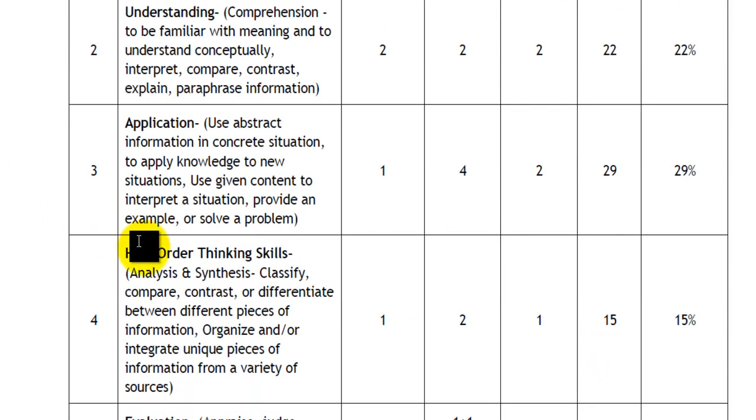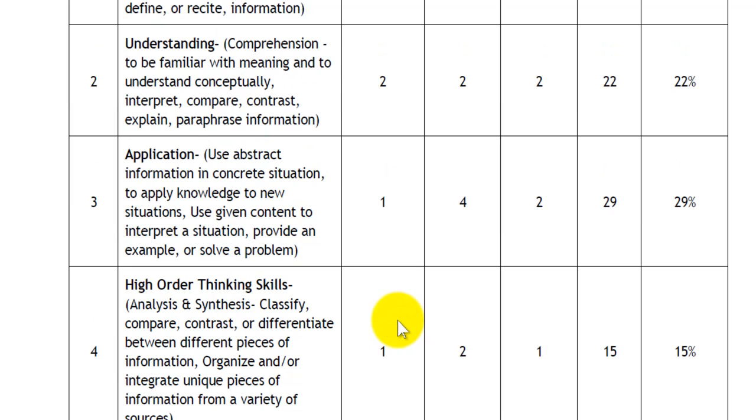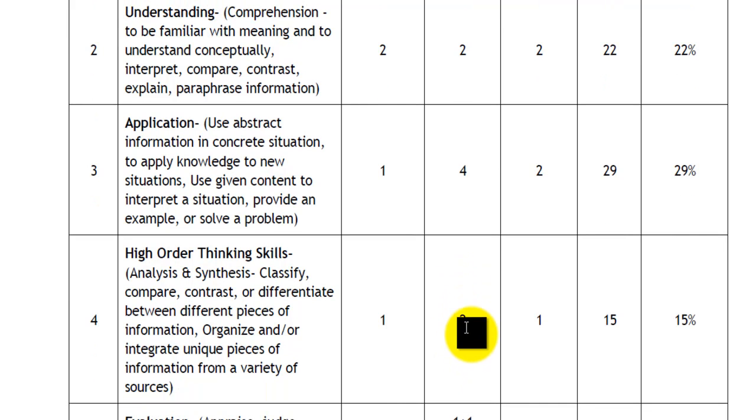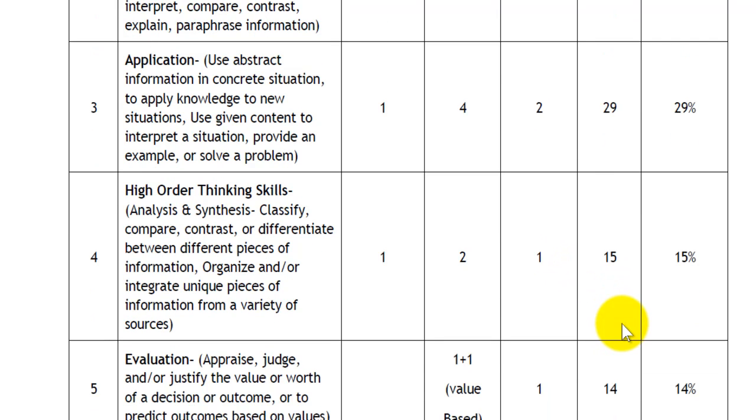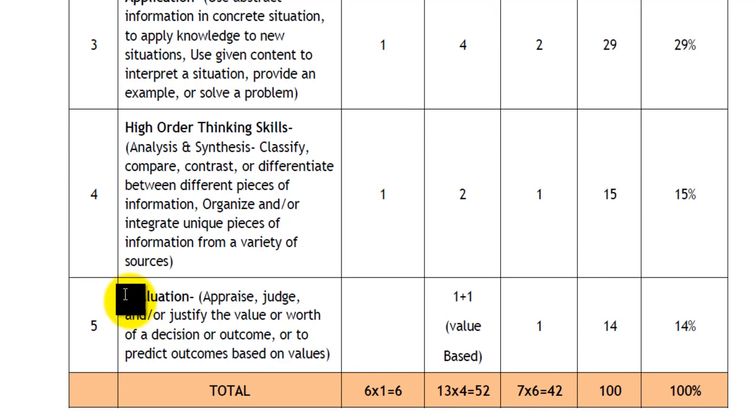The next type are high order thinking skills questions, which have a higher difficulty level. There will be 1 very short answer, 2 long answer type 1 questions, and 1 long answer type 2 question, carrying a total of 15 marks.